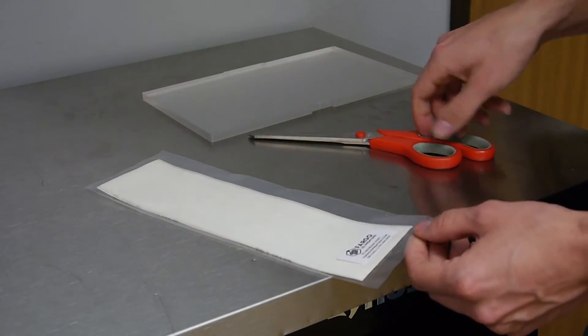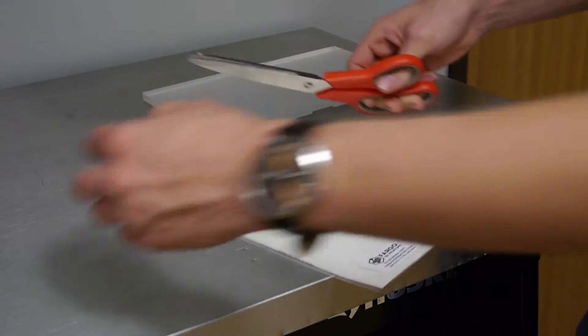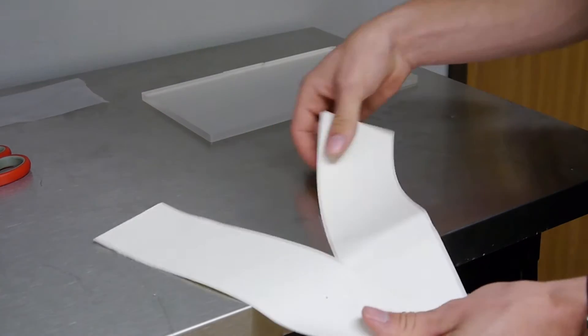Next, you're going to take your Fargo 3D Printing gaffer tape, cut the end open, and then there will be two pieces of gaffer tape inside the packaging.